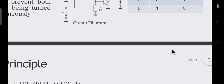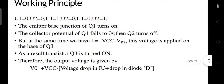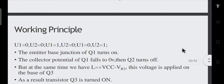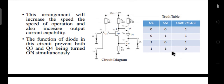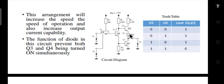Moving on, the output branch from which we take the output — where Q3, D1, and Q4 are connected along with a resistance — has these two transistors stacked one over the other. Q3 is over D1, and D1 and Q3 are over Q4. Because they are stacked one over the other, this arrangement is called the totem pole output. The D1 diode ensures that Q3 and Q4 do not turn on simultaneously.